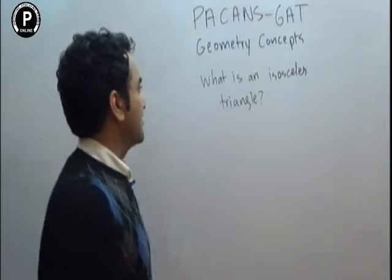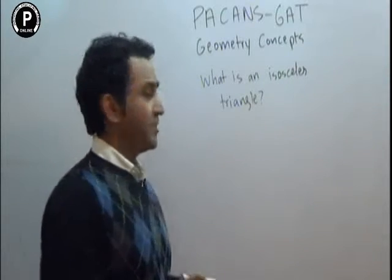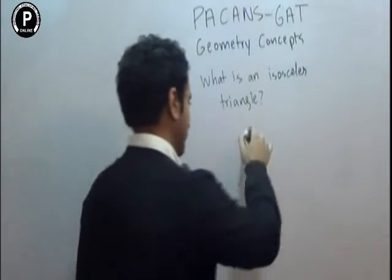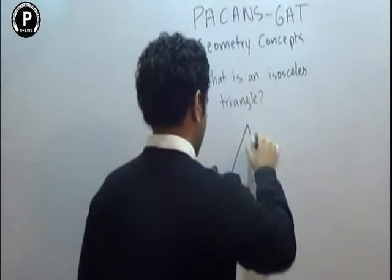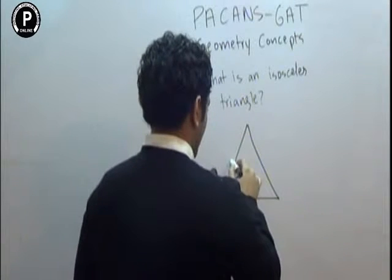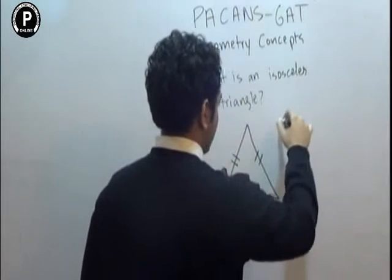Welcome to Peckens GATT Geometry Concerts. What is an isosceles triangle? An isosceles triangle is one which has two equal sides.